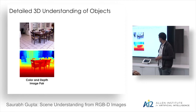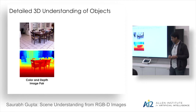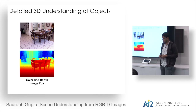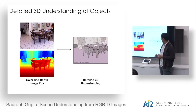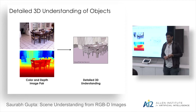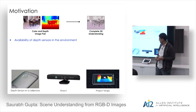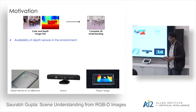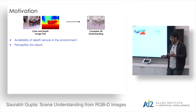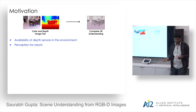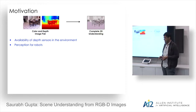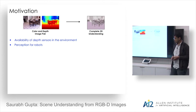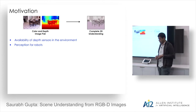We have a color and depth image from an RGBD sensor like the Microsoft Kinect, and we want to represent objects present in the scene with corresponding CAD models and align those CAD models to the data. The motivation is the increasing availability of depth sensors, and all this data requires us to figure out how to understand it.